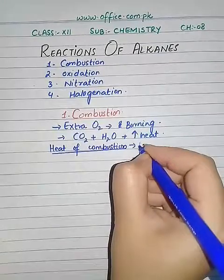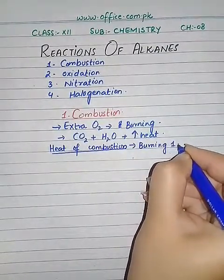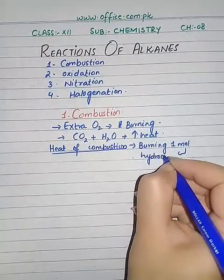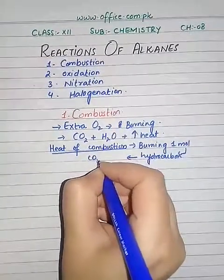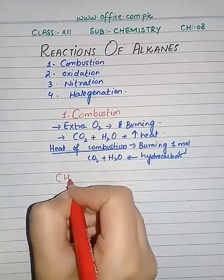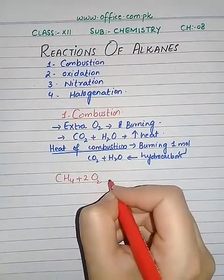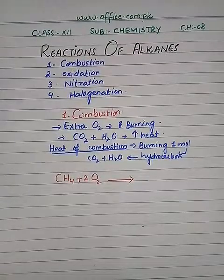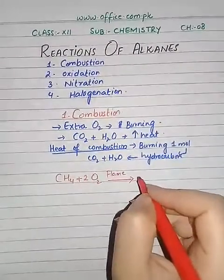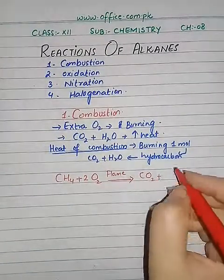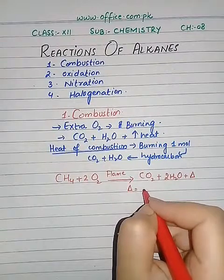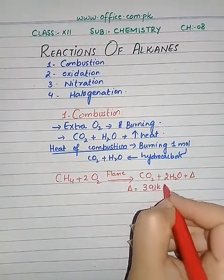The heat produced as a result of burning one mole of alkane or hydrocarbon, resulting in the formation of carbon dioxide and water. Now let us see the chemical equation for the process. We will take methane, the simplest alkane, with excess oxygen. A flame or high temperature is needed to carry out the reaction, and the products are carbon dioxide, water, and heat energy — approximately 391 kilojoules per mole.